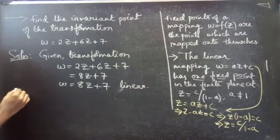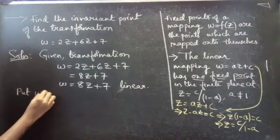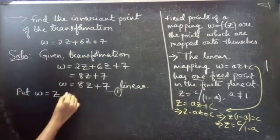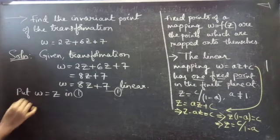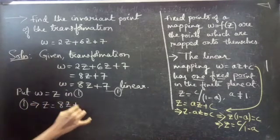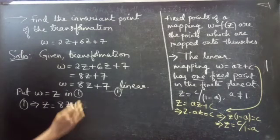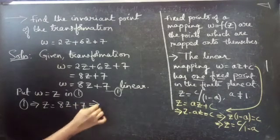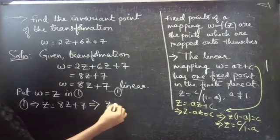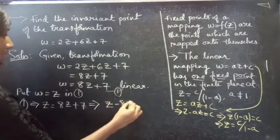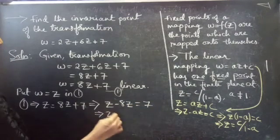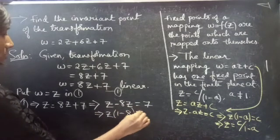So now put W equals Z. From the transformation we get Z equals 8Z plus 7. Take 8Z to the left-hand side: Z minus 8Z equals 7. Now take Z common from these two, so we get Z into 1 minus 8 equals 7.